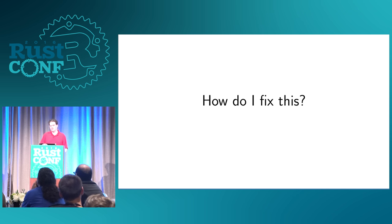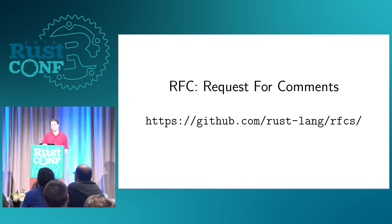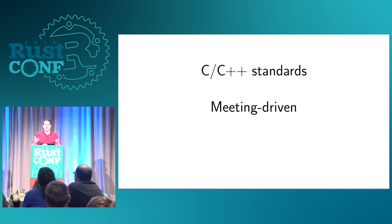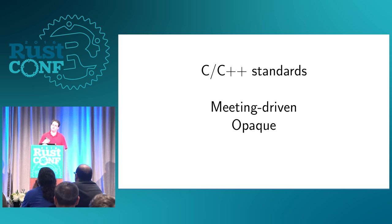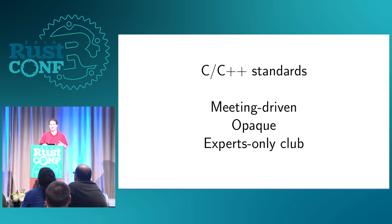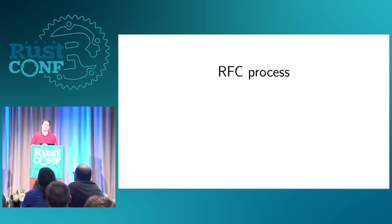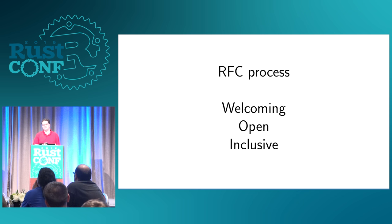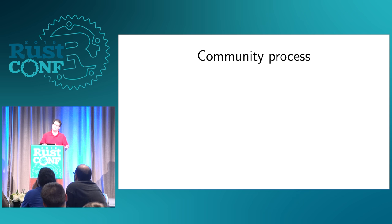So I looked into this trying to figure out what to do, and I found the request for comments process in Rust. I want to compare this for a moment to the C and C++ standards process. It tends to be very in-person meeting-driven, very opaque, and it only really produces results when it has something to show. It's pretty much an experts-only club. To compare that to the Rust RFC process: like many things in Rust, it's extremely welcoming, open, transparent, and extremely inclusive. Rust has a community process around RFCs — it's very lightweight but not too light.